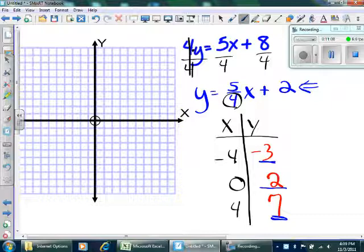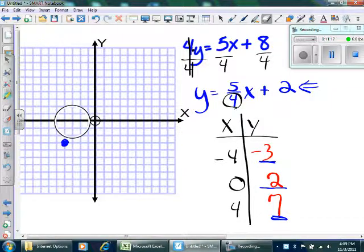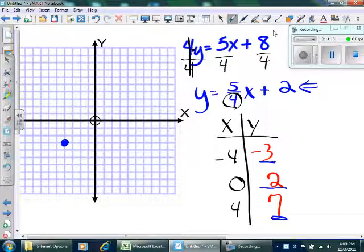I will quickly graph these. Negative 1, 2, 3, 4. 1, 2, 3 negative. Get rid of those little counting points because I don't want them to screw us up. So, 0, 2, and then 4, 1, 2, 3, 4, 5, 6, 7. There we go. I've got three points.